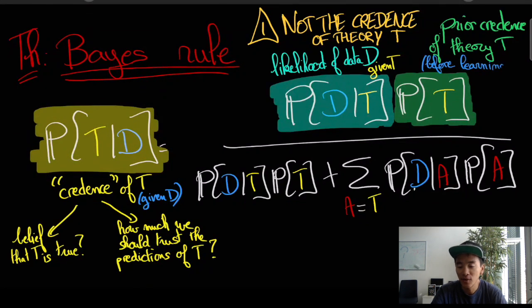This is a term that is very weird at first because it says that we should give credences to theories even though we have no data. This is the prior credence it is what we should believe before looking at the data and according to Bayesianism you should always have a prior credence before looking at the data.